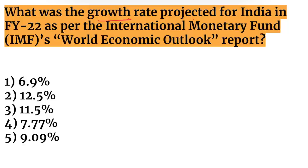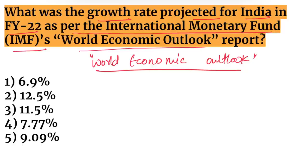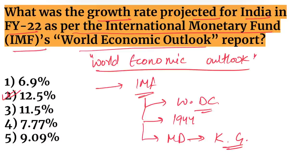Next question: what was the growth rate projected for India in the fiscal year as per the IMF's World Economic Outlook report? The World Economic Outlook report is released by the IMF, headquartered in Washington DC. The projected growth rate for India was 12.5%. The IMF was established in 1944 and its Managing Director is Kristalina Georgieva.